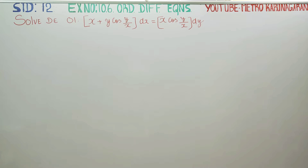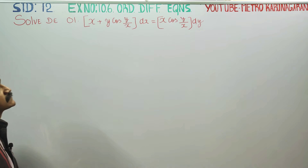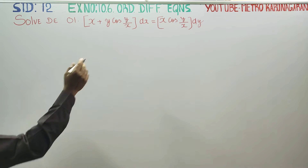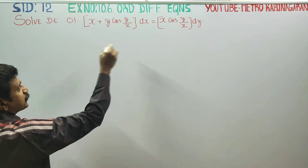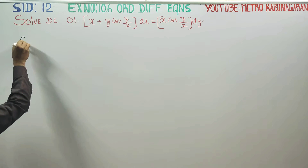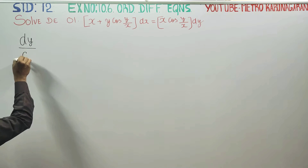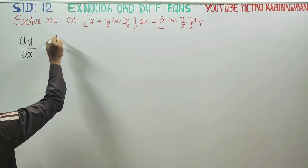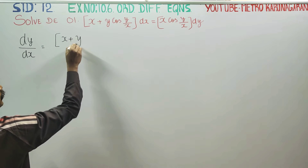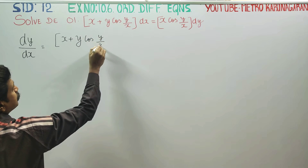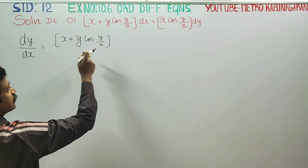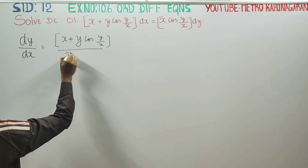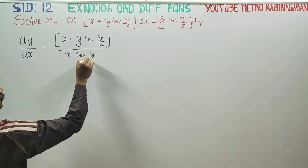Dear 12th standard students, in exercise number 10.6, solve the differential equation: (x plus y cos(y/x)) dx is equal to x cos(y/x) dy. My first step will be to find dy by dx. dy/dx is equal to (x plus y cos(y/x)) divided by (x cos(y/x)).